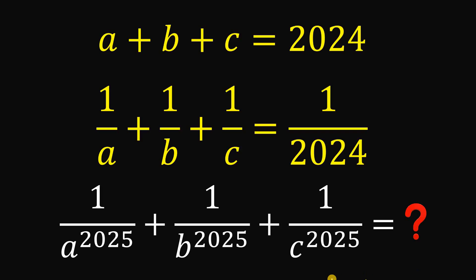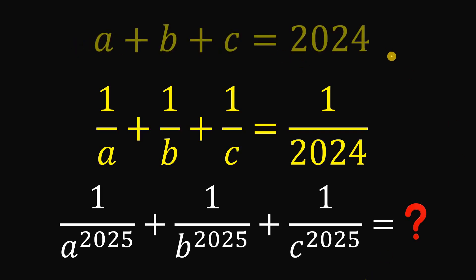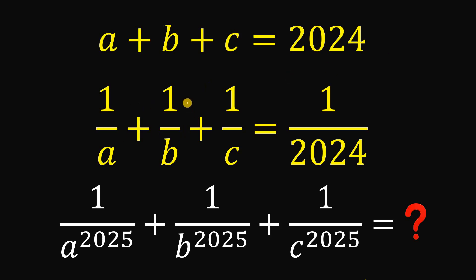This question is inspired by the Vietnamese Mathematical Olympiad. Here's the question: given the equation A plus B plus C equals 2024, and 1 over A plus 1 over B plus 1 over C equals 1 over 2024, what is the numerical value of 1 over A raised to the power of 2025 plus 1 over B raised to the power of 2025 plus 1 over C raised to the power of 2025?